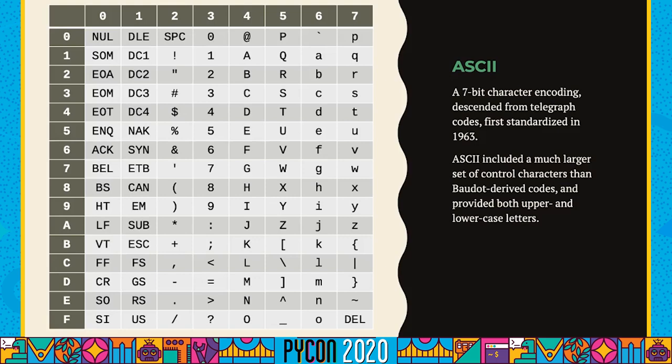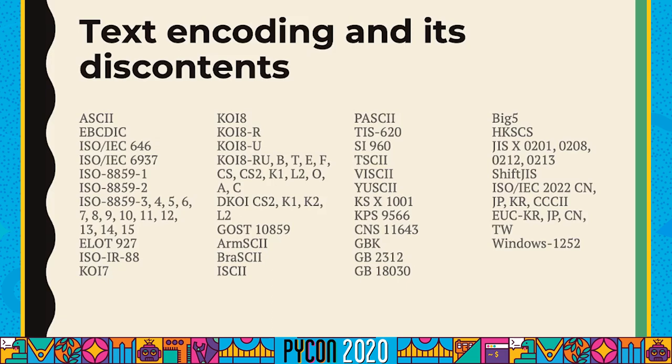ASCII owes a lot to ITA2 and the Baudot family of telegraph codes, and it really took over the world, even though it shouldn't have. The problem with ASCII is it's the American Standard Code, which is a problem in a world containing a lot more countries than America and a lot more languages than English. Even though ASCII was built into a lot of systems and still is today, lots of different people developed text encodings to represent their own languages, dialects, regions, and countries. There are a huge number of them out there.